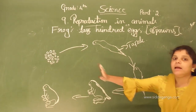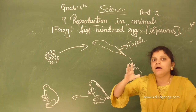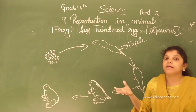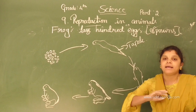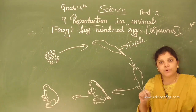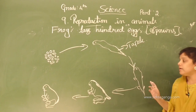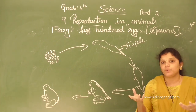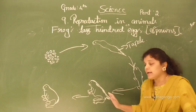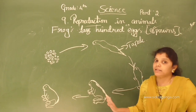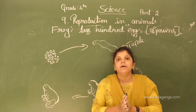In frogs, they lay hundreds of eggs called spawns. Every egg grows into a tadpole. Normally the tadpole looks like a fish — it swims in water, has no wings, no legs, but has a tail. After some days, the tail starts to disappear and the legs start to grow. After some more days, the legs are totally grown and the tail totally disappears, and the adult frog comes out from the water.